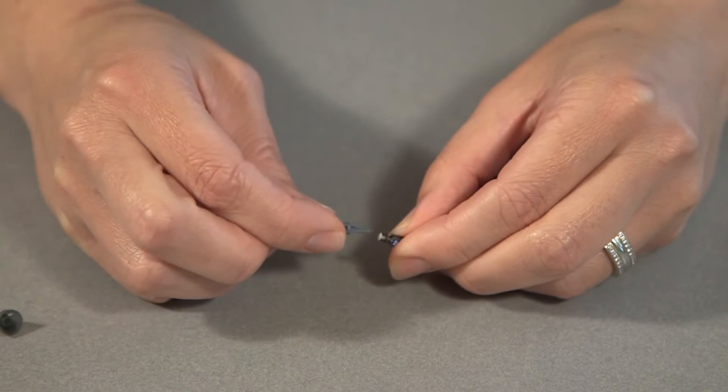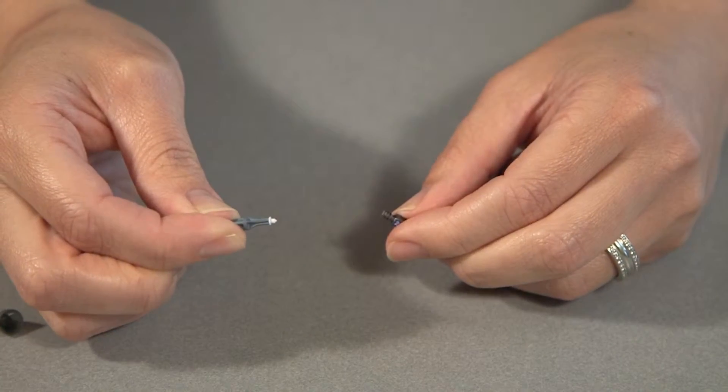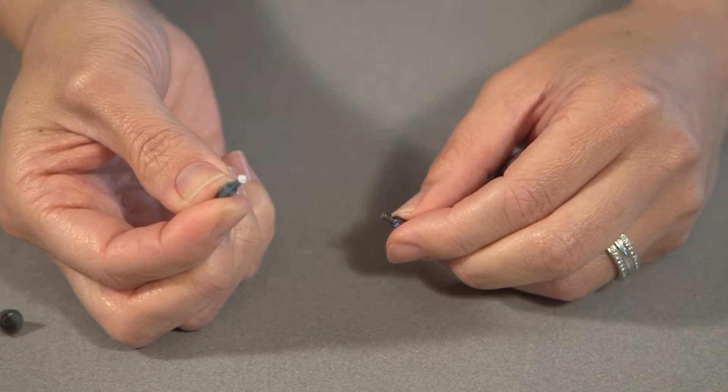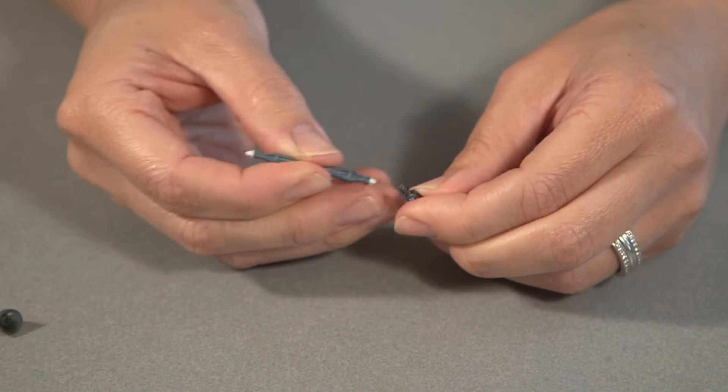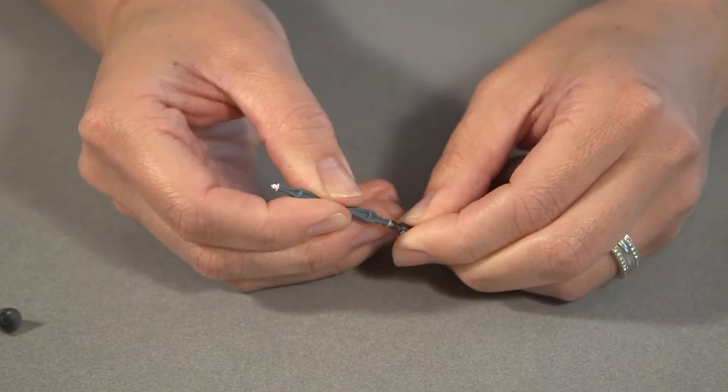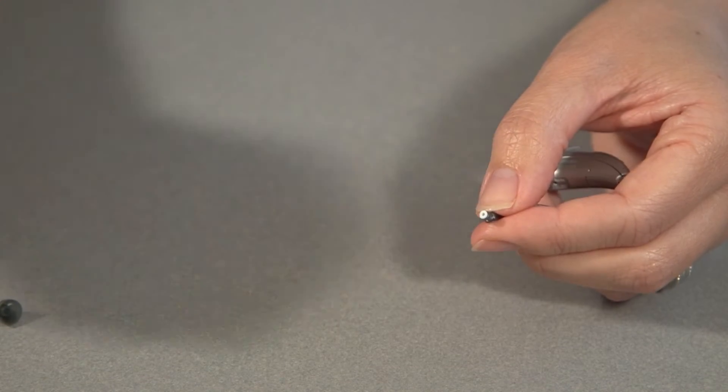And you just push it in, push the stick in and pull out the dirty wax trap. Turn the stick around and insert the new one. And then this can be tossed into the garbage.